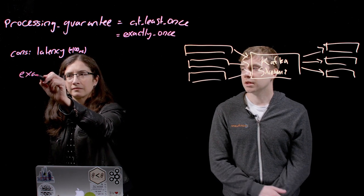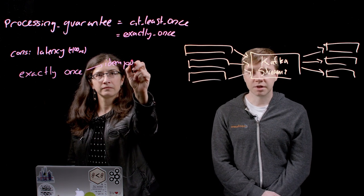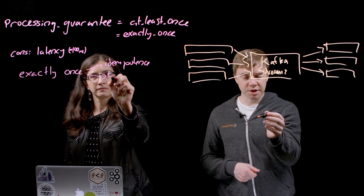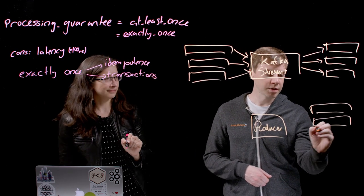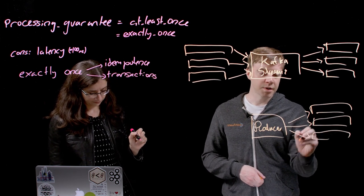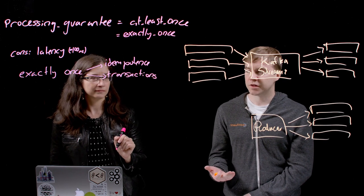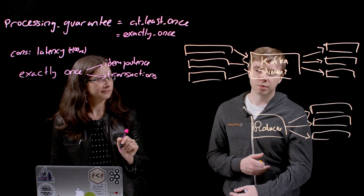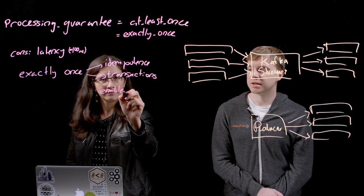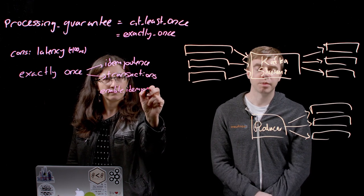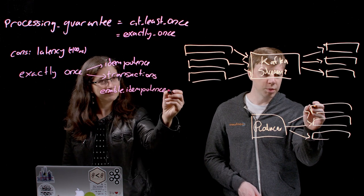So now if we take exactly-once and we break it down, exactly-once really is composed of two pieces, two building blocks. So the first thing is idempotence. So by default, Kafka gives you at-least-once guarantees. And basically the problem is when we do a write to the broker, if we don't get the acknowledgment back, if the connection is lost for whatever reason, then we may have to retry. And in this case, we may have duplicates. So idempotence is about ensuring that even if we retry, we won't have duplicates.